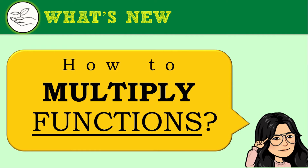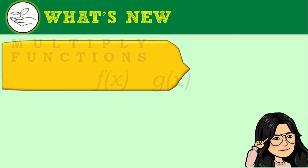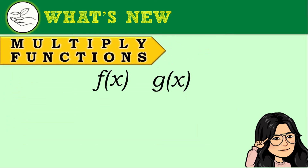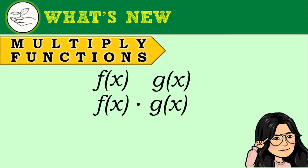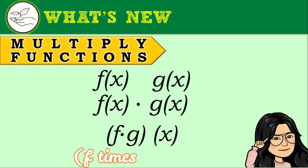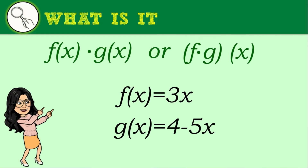Now let's move on to how to multiply functions. To multiply functions like the given f(x) and g(x), we will use the notation f(x) times g(x), or we could also express it as f times g of x.